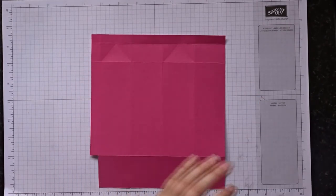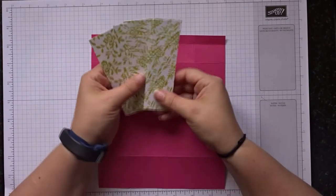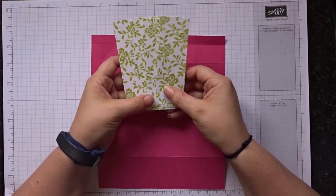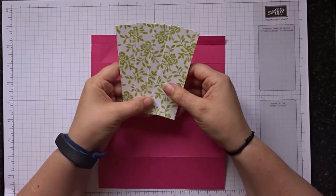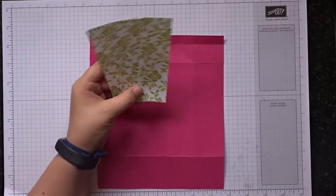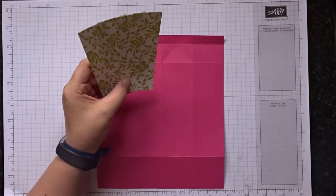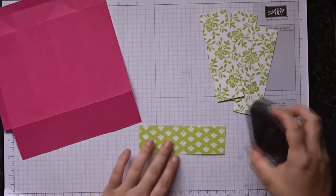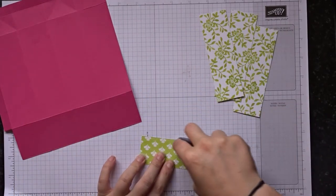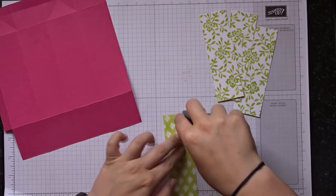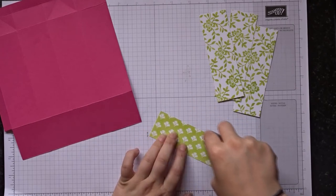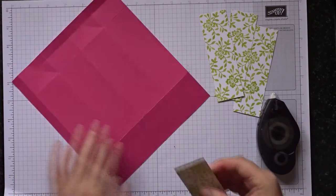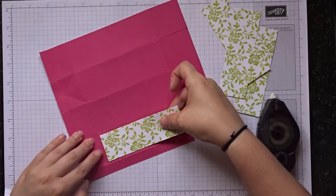So now we need to put our DSP on. The DSP I've gone for is Lemon Lime Twist from the new Fresh Florals collection. I'm going to use this side. And the DSP, there's four of them, and it's one and a half by four and three quarters. We're going to put one of these on each side. So just use a fast fuse and make sure you get the glue right to the edge as that will matter when we do our next bit.